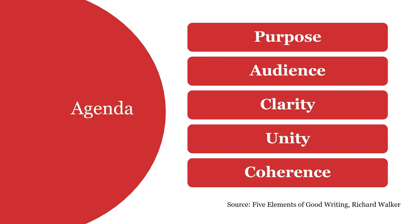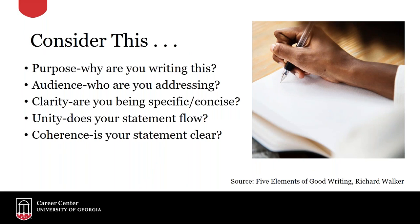What we're going to go through reflects the five elements of good writing by Richard Walker. There's a good PDF you can find online if you Google that, which covers some of these in more depth. It's really about how to become a good writer, specifically in the context of the personal statement. Purpose is really just: why are you writing this? Your audience is: who are you addressing? Clarity is: are you being specific and concise, showing a clear picture of what you're trying to communicate?